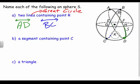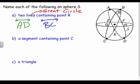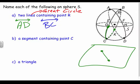Now name a segment containing point C. A segment doesn't have to go on forever, but it still has to be part of a great circle. Here's point C — I could name segment KG, because if I unwrapped the sphere plane it would make a straight segment from G to K.